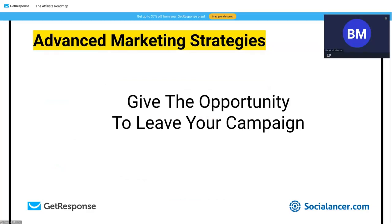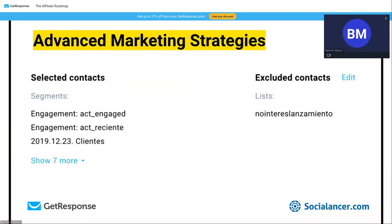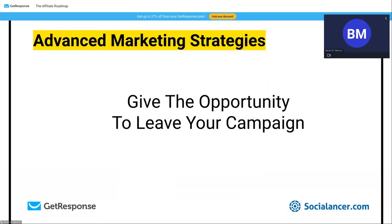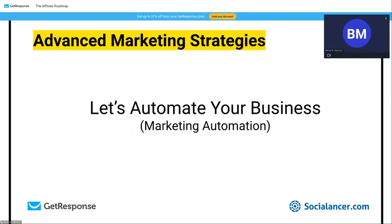Give people the opportunity to leave a specific campaign without unsubscribing from your entire list. At the bottom of our emails, we tell them: if you don't want more emails about this software but still want to stay subscribed, click here. We move them to a 'not interested' list, then use an automation to wait seven days — matching the length of our newsletter promotions — and then remove them from that list. When sending future emails, you exclude those who aren't interested.